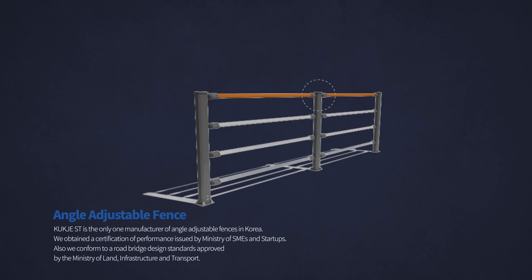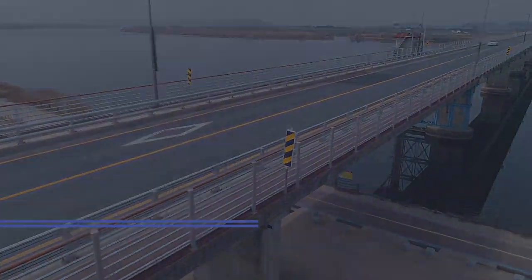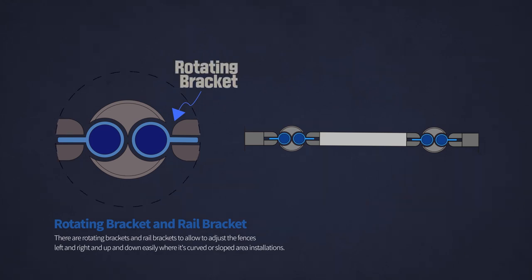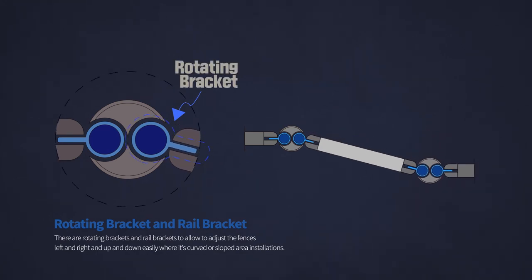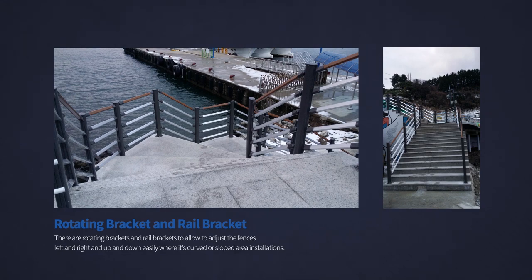In addition, Cook JST is the only one manufacturer of angle-adjustable fences in Korea. We obtained a certification of performance issued by Ministry of SMEs and startups. Also, we conform to our road bridge design standards approved by the Ministry of Land, Infrastructure and Transport. There are rotating brackets and rail brackets to allow adjustment of the fences left and right and up and down easily for curved or sloped area installations.